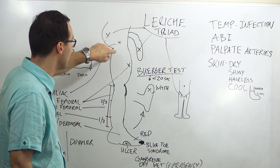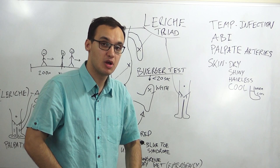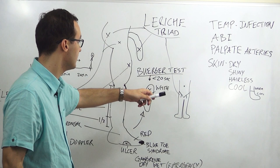So to summarize, the Leriche triad is: pain while walking in the buttock region, erectile dysfunction, and non-palpable femoral arteries.